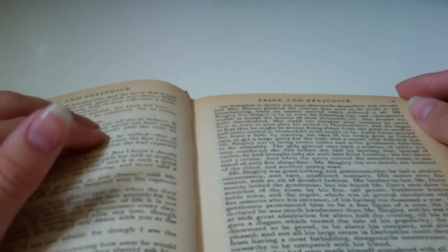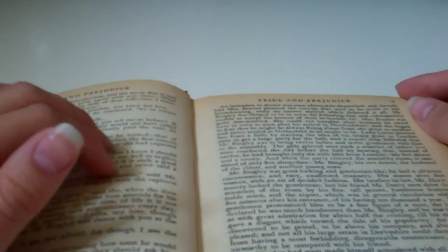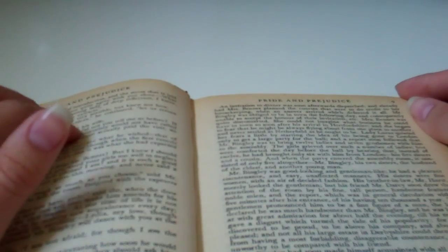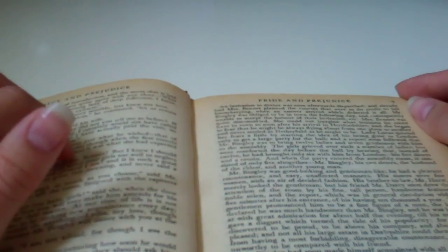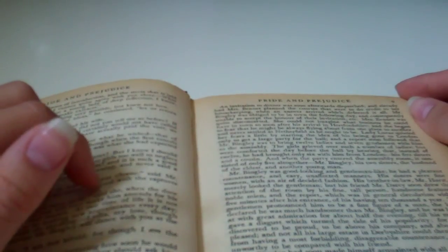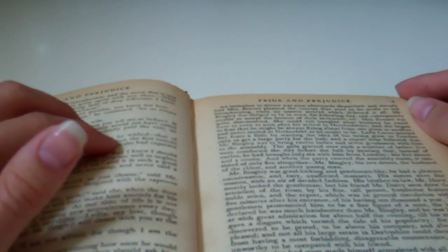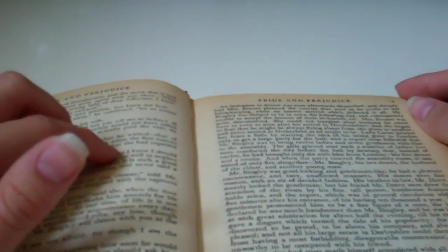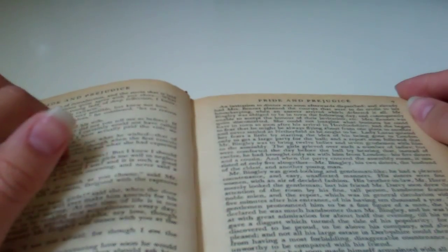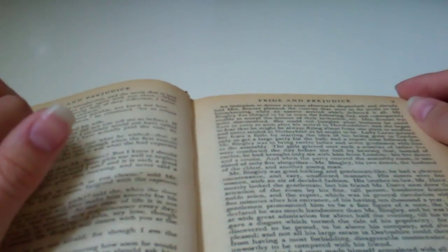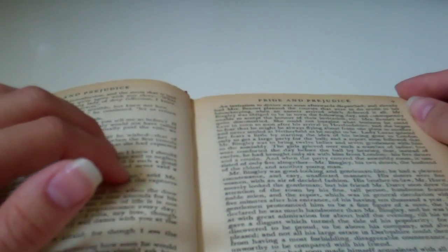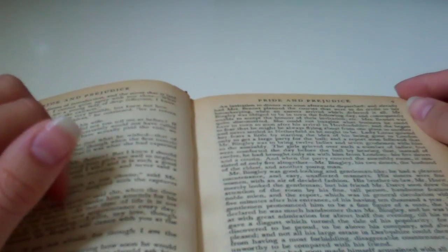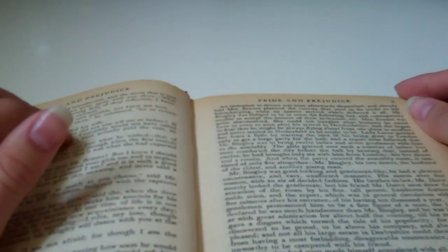And a report soon followed that Mr. Bingley was to bring twelve ladies and seven gentlemen with him to the assembly. The girls grieved over such a number of ladies, but were comforted the day before the ball by hearing that instead of twelve, he had brought only six with him from London, his five sisters and a cousin. And when the party entered the assembly room, it consisted of only five altogether: Mr. Bingley, his two sisters, the husband of the eldest, and another young man.